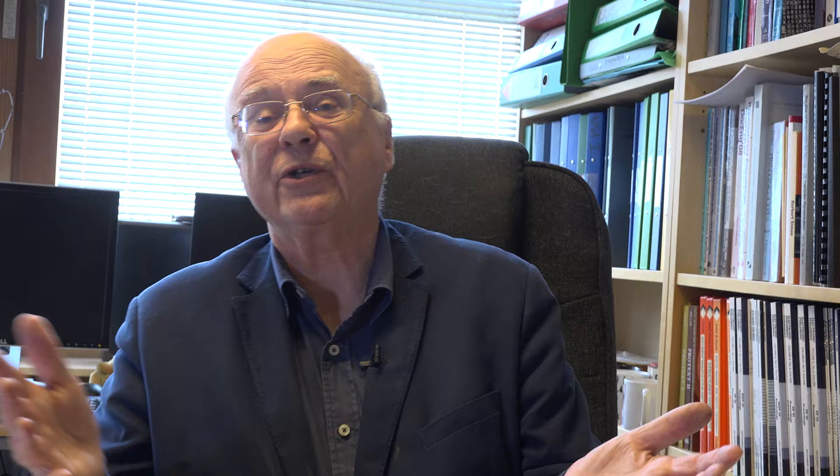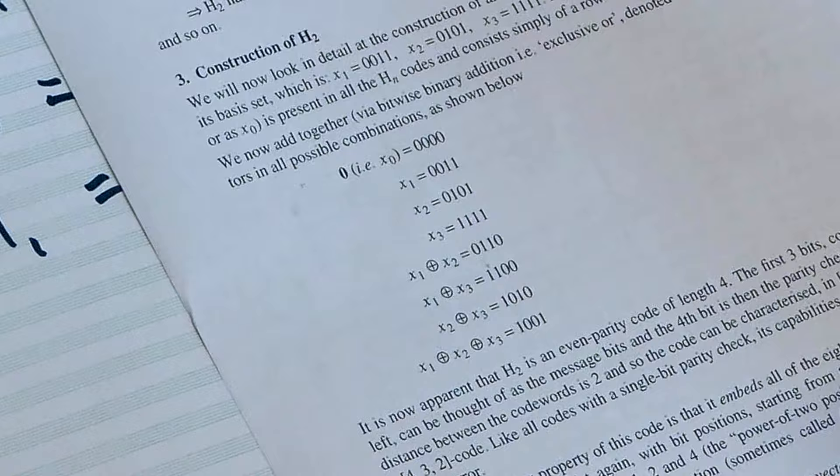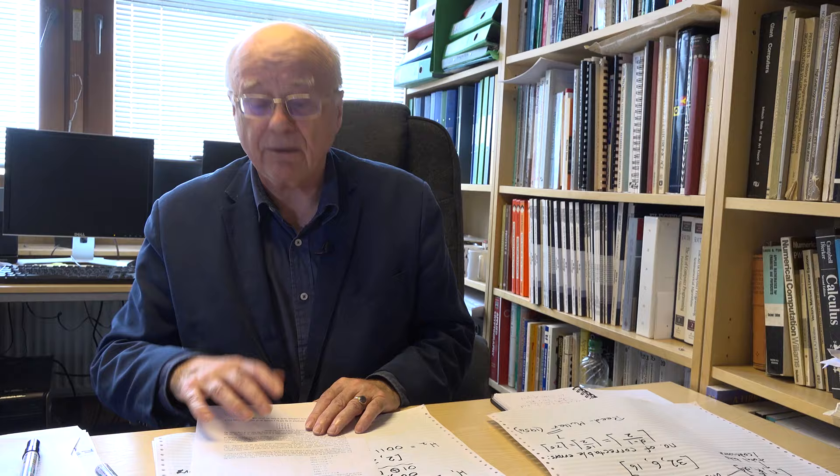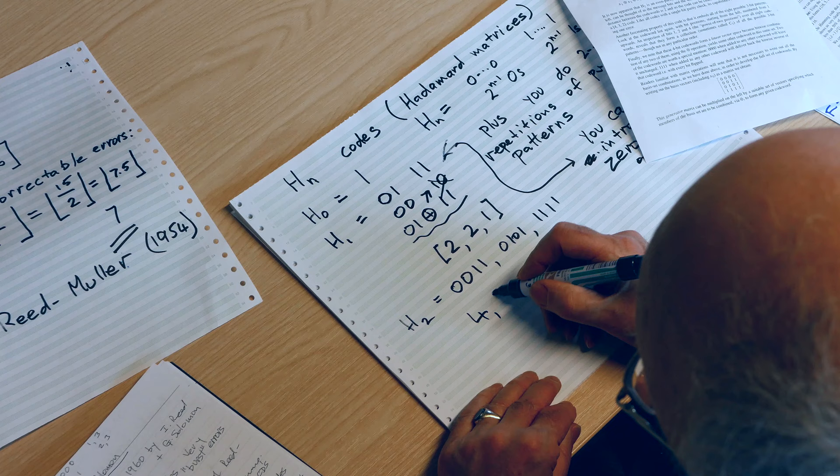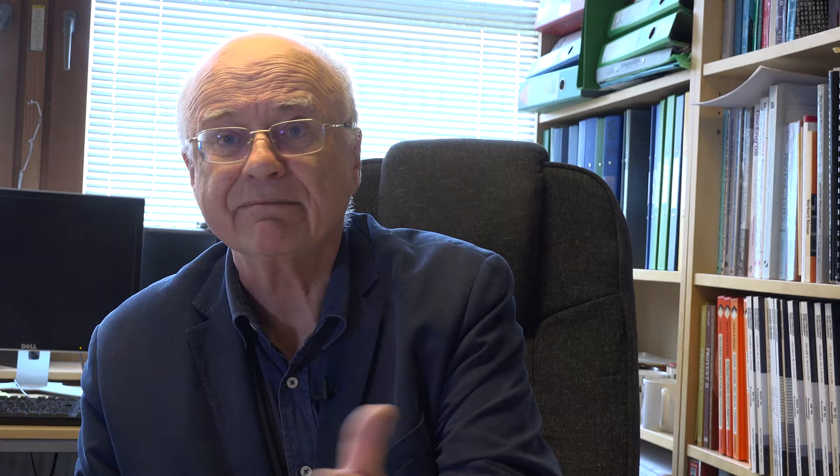What is the minimum distance of this code? Look: 0, 0, 1, 1 — how distant is that from four zeros? 2. The only exception is the zero vector versus all-ones, which gives distance 4, but we care about the minimum. So H2 is a 4, 3, 2 code. If a thing's only got distance 2, you can't correct an error — you can only detect it. Looking at the codewords, it's actually carrying a 3-bit payload with one parity check bit, always even parity.